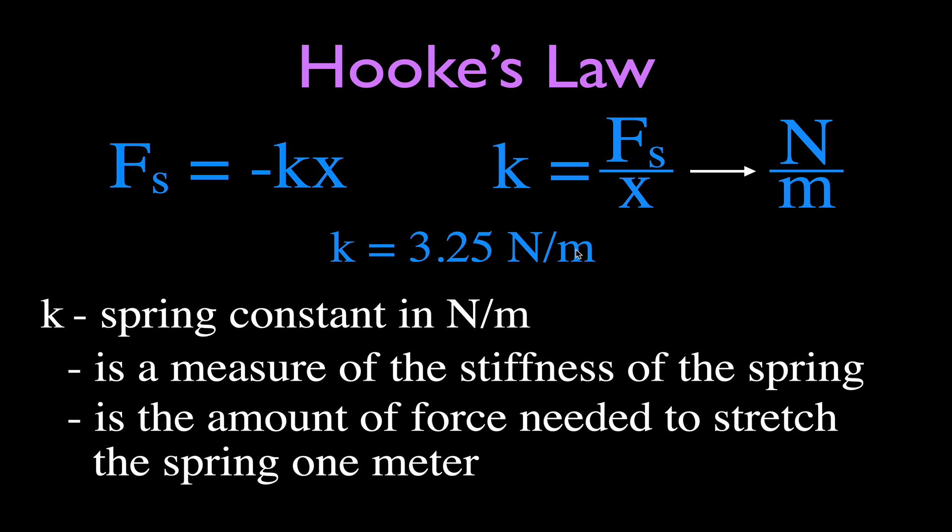The stiffer the spring, the more force it takes to change its length by one meter. The softer the spring, the less force it takes to change its length. K is measured in newtons per meter — it's a measure of the stiffness of the spring. I like to say it's the amount of force needed to stretch the spring one meter. In this example, it takes 3.25 newtons of force to change the length of the spring by one meter.